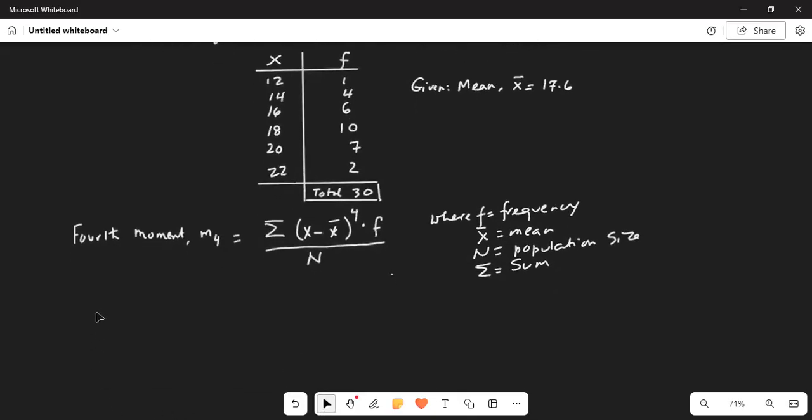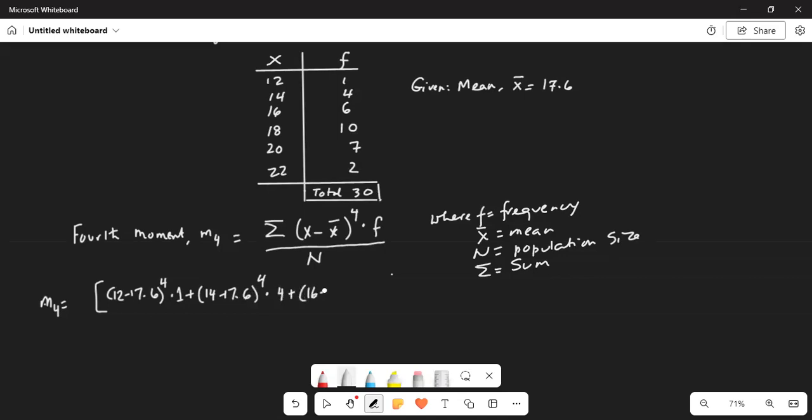We will start doing the calculations. So M4 is equal to, for the first it will be 12 minus 17.6 to the power of 4 multiplied by its frequency which is 1. Then it is 14 minus 17.6 exponent 4 multiplied by its frequency which is 4 plus 16 minus 17.6 exponent to 4 multiplied by the frequency which is 6.